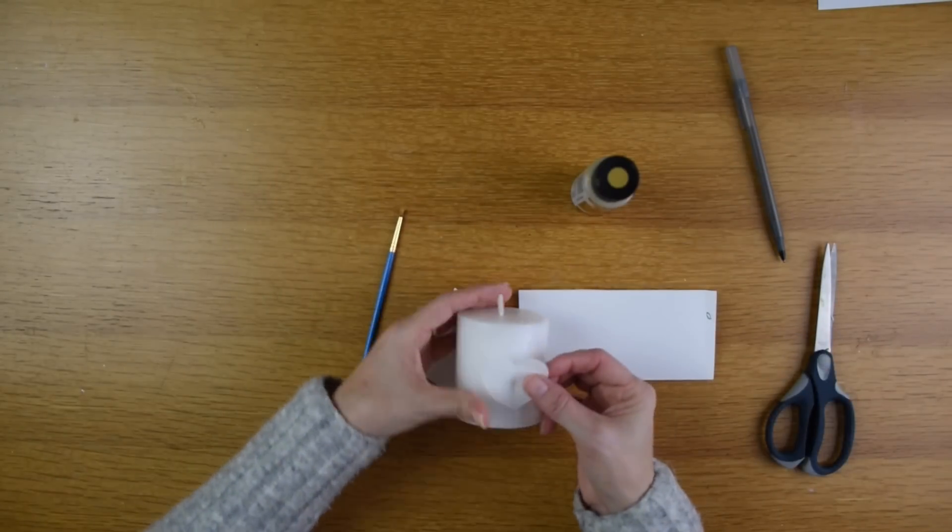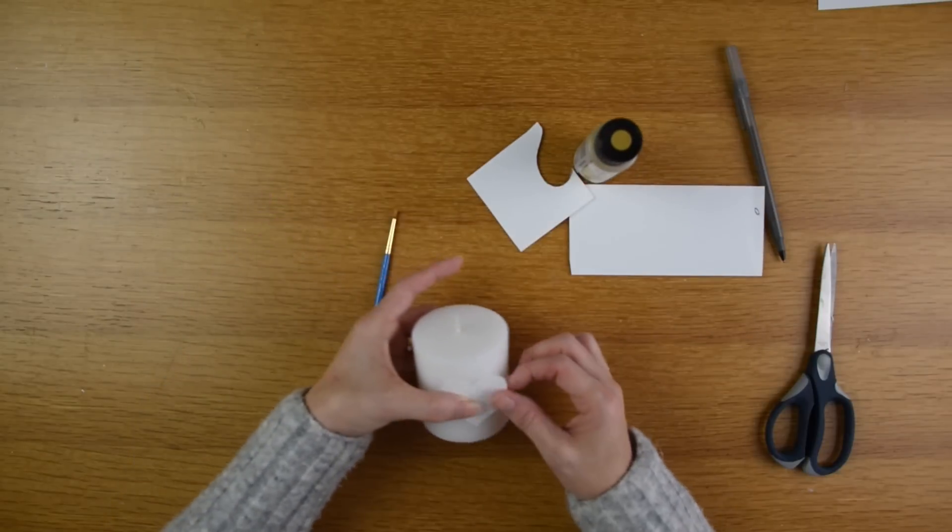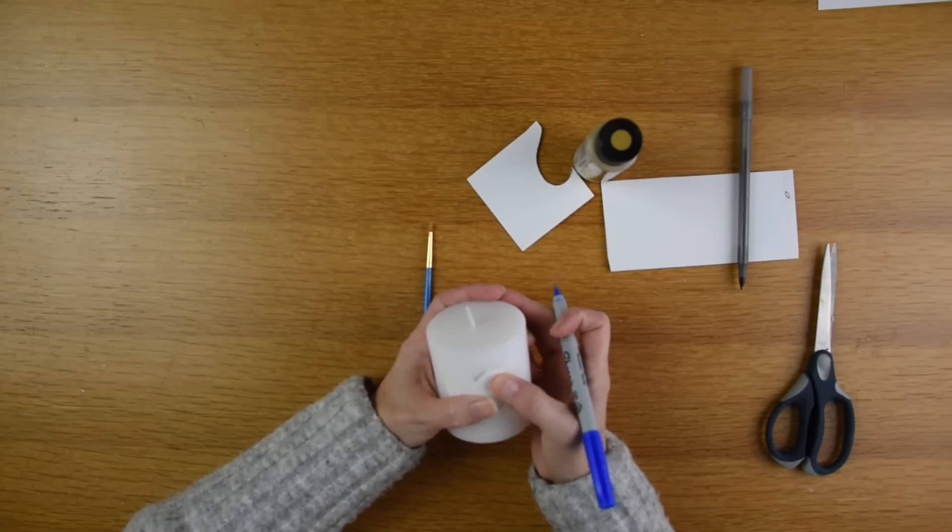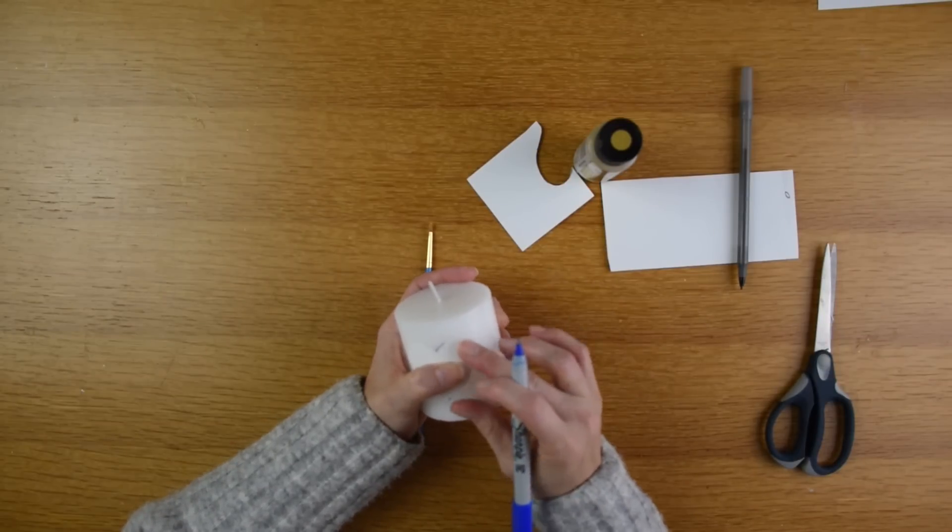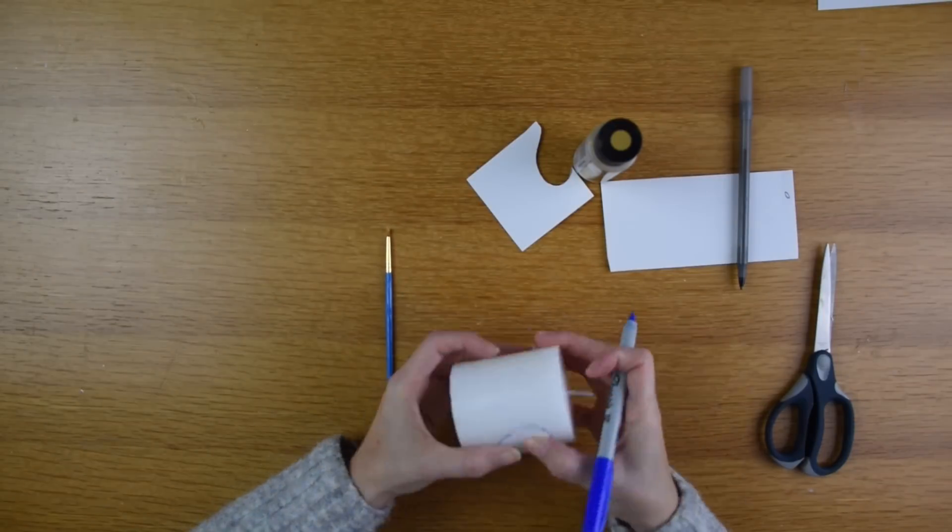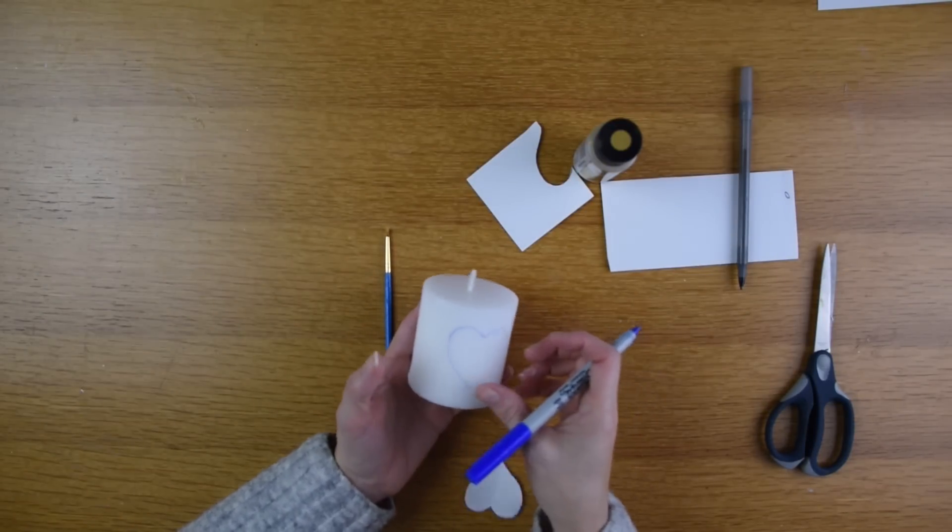Next I'm going to take my little heart template and place it on top of my candle and I am going to hold it in place. If you have some double-sided tape it will work much better but I don't have any for this video. And I am going to use a marker and trace it out. I tried with the ballpoint pen and it did not quite make the outline so I did get a marker to outline with.